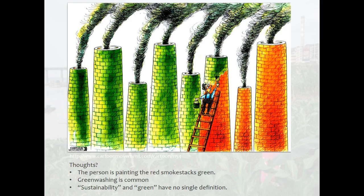A corollary of this, and something really important to think about throughout this semester, is that sustainability and green have no single definition. There's no single universally recognized definition, and there's no definitive person, body, or organization that says you can't call something green. That's really one of the big problems we have today — a lot of people want to be sustainable or appear to be sustainable, but the key is figuring out whether or not something really is sustainable. That's one of the main purposes of this class.